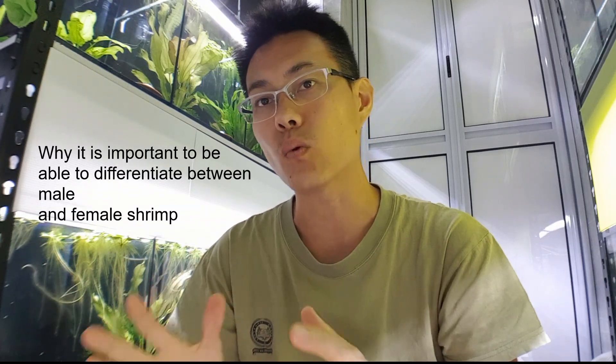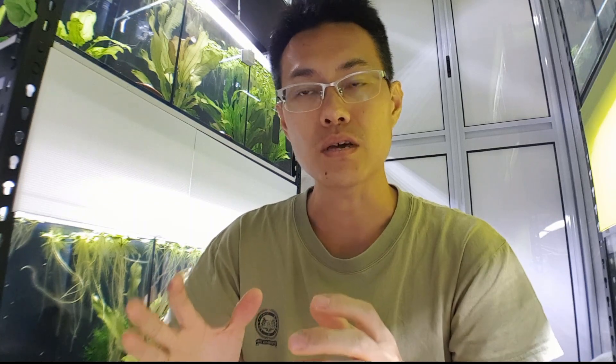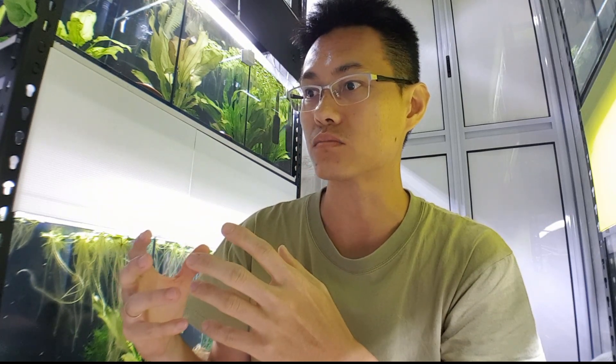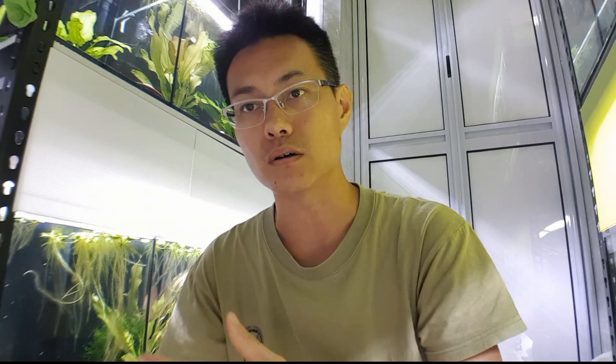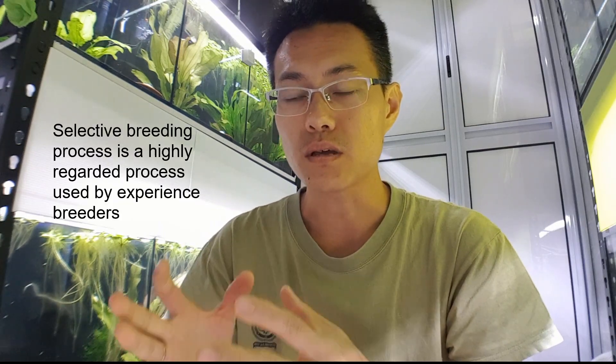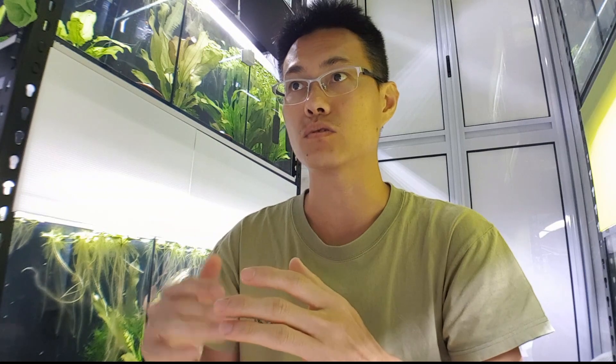Coming back to the video — talking about the differences between male and female shrimp and how we link that to selective breeding. A little bit of background on why this is so important: if you are unable to differentiate between a male and female shrimplet at 0.8 cm or even 1 cm, a male could actually crossbreed with your stock shrimp, which is not something you want in the selective breeding process. That is one of the biggest key reasons why identifying male and female is so critical.